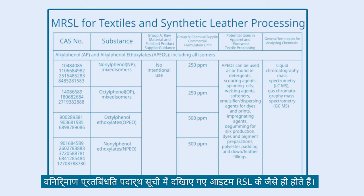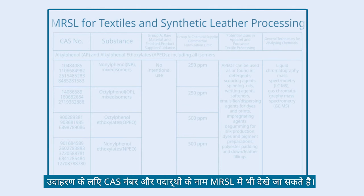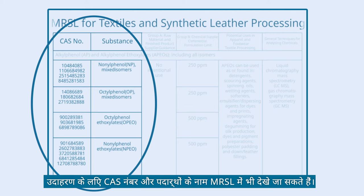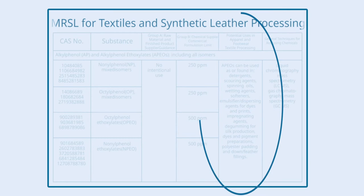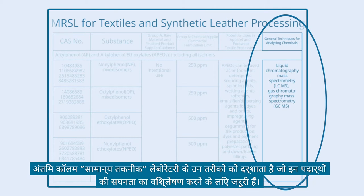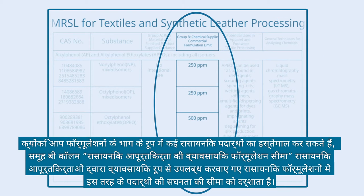The items shown in a Manufacturing Restricted Substance List are similar to those of an RSL. For example, the CAS numbers and names of the substances can also be found in the MRSL. The Potential Uses column explains when and for what purpose the substance is commonly used during manufacturing. The General Technique column indicates the laboratory methods required for analyzing concentrations of these substances. The Group B column — Chemical Supplier Commercial Formulation Limit — shows the concentration limits of such substances in commercially available chemical formulations from chemical suppliers.